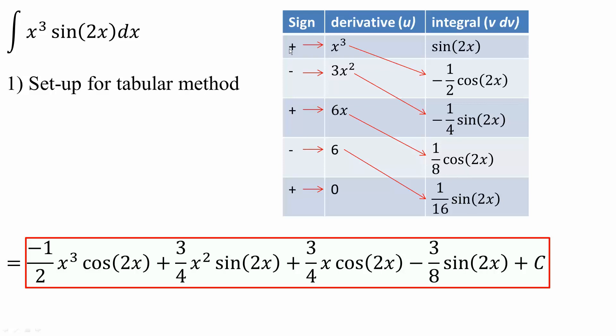Next, we say positive 1 times x cubed times this piece right here, and we get negative 1 half x cubed cosine 2x. Next, we say negative 1 times this piece times this piece, and we get 3 over 4 x squared sine 2x.